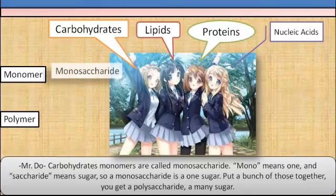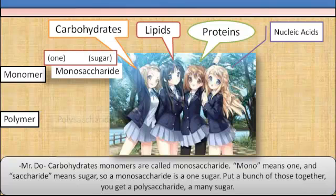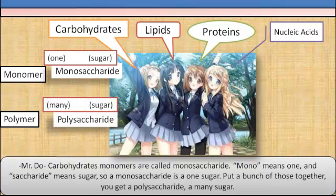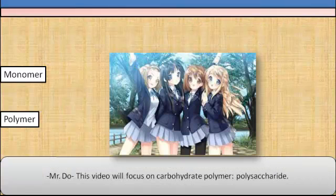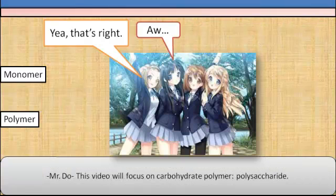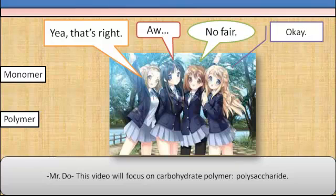Carbohydrate monomers are called monosaccharides. Mono means one and saccharide means sugar, so a monosaccharide is one sugar. Put a bunch of these together and you get a polysaccharide — a many sugar. This video will focus on the carbohydrate polymer: polysaccharide.